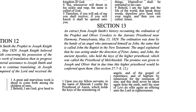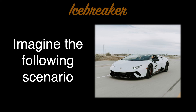Doctrine and Covenants Section 13 — the section where the section heading is longer than the section itself — represents one of the most significant events of the Restoration and indeed the last 2,000 years. For the first time in centuries, on May 15, 1829, an ordinance was performed under the proper and real authority of God's priesthood power. To help young people understand the importance of priesthood authority, I have them imagine a scenario: imagine you're driving down the freeway in your dream car, going a little fast.